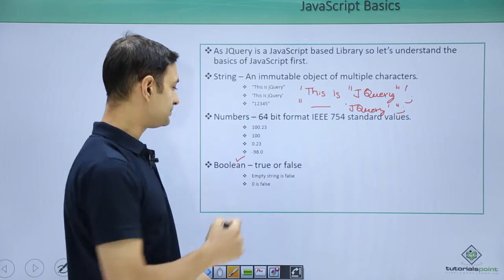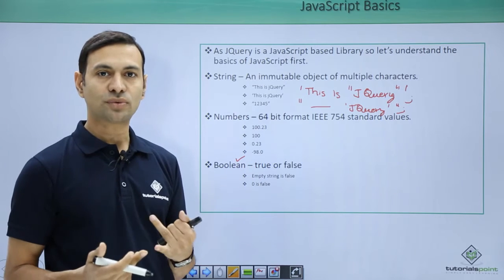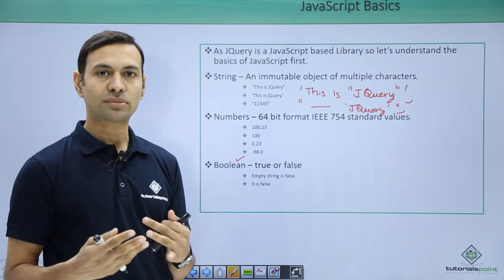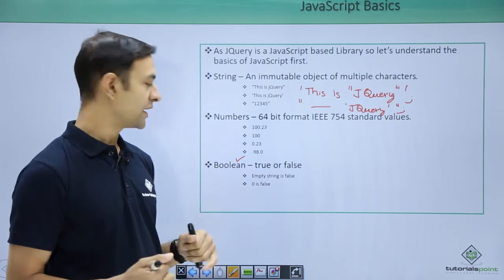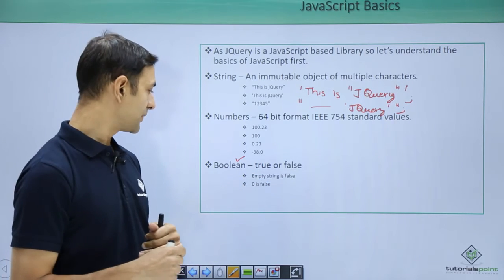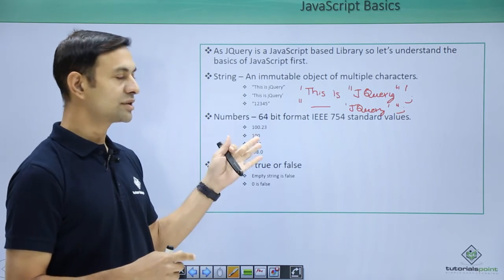Now come to boolean. Boolean is true and false. JavaScript has special rules for boolean: 0 is false, non-zero numbers are true. Then we have empty string is false, non-empty string is true. So these are JavaScript basics.